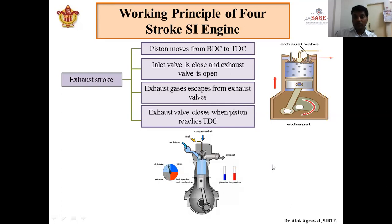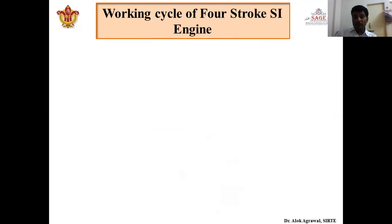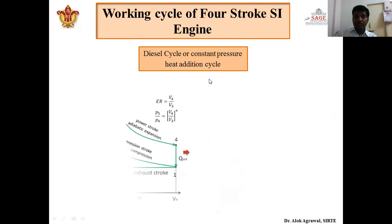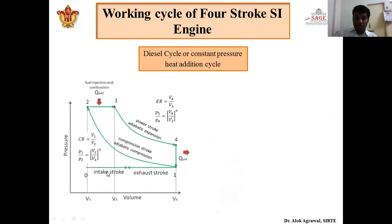The 4-stroke CI engine works on the diesel cycle, also called the constant pressure heat addition cycle. The only difference between the Otto cycle and the diesel cycle is the process of heat addition. In the Otto cycle, heat addition occurs at constant volume, whereas in the diesel cycle it occurs at constant pressure. That is why the diesel cycle is also called the constant pressure heat addition cycle.